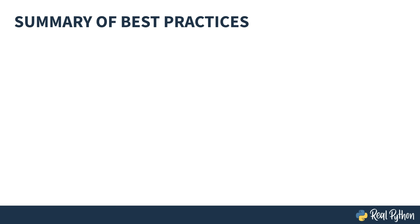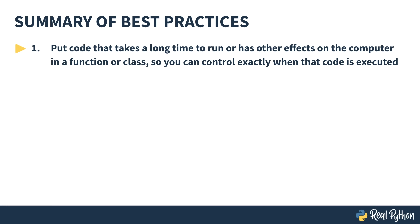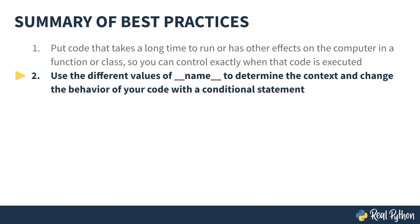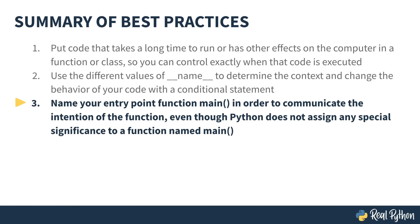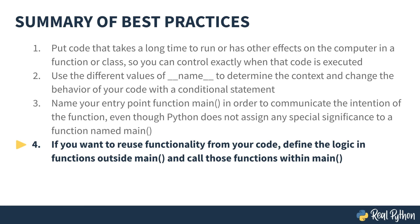So here's a recap of the four key best practices about main in Python. Number one: put code that takes a long time to run or has other effects on the computer in a function or class, so you can control exactly when that code is executed. Two: use the different values of __name__ to determine the context and change the behavior of your code with a conditional statement. Three: name your entry point function main in order to communicate the intention of the function, even though Python does not assign any special significance to a function called main. And number four: if you want to reuse functionality from your code, define the logic in functions outside main and call those functions from within main.